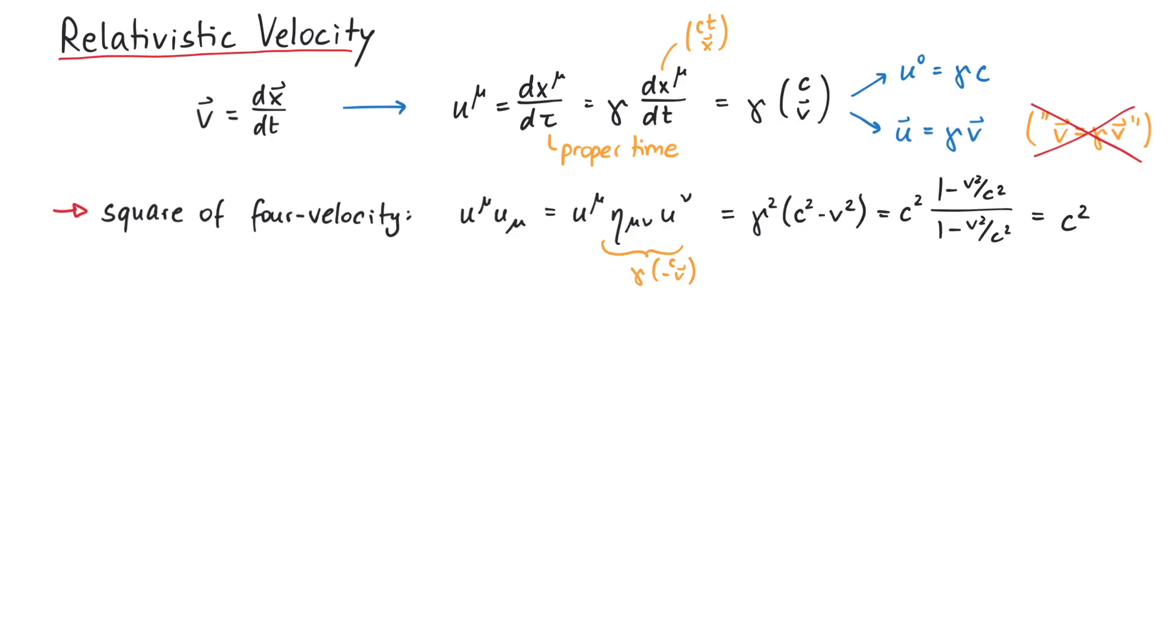This result that the square of the 4 velocity is always equal to the speed of light squared is rather noteworthy. Using the 4 velocity, we are able to derive the addition of relativistic velocities.